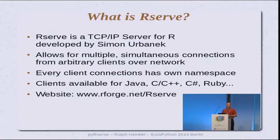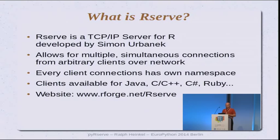Every client that connects to the R server via TCP/IP has its own namespace, so all calculations are done without side effects. Clients are available besides the Python one for Java, C++, C#, and so on, and there's a growing number of clients for R-Serve. Some come with the R-Serve package directly; others can be downloaded as third-party packages from the R-Forge server.